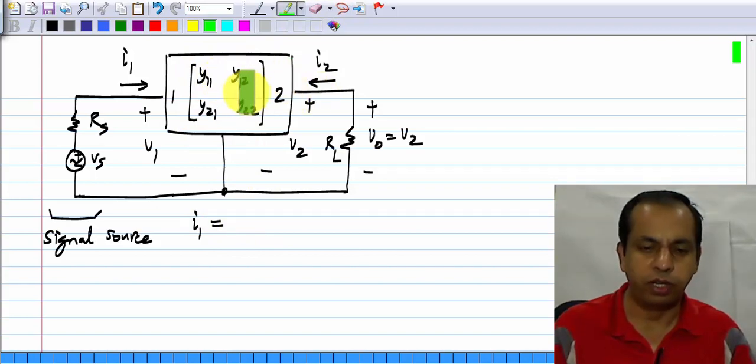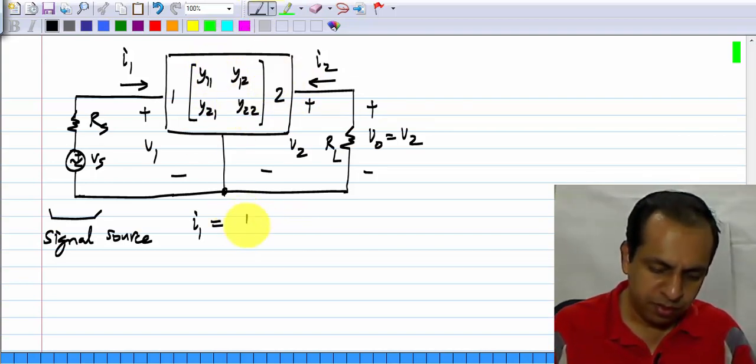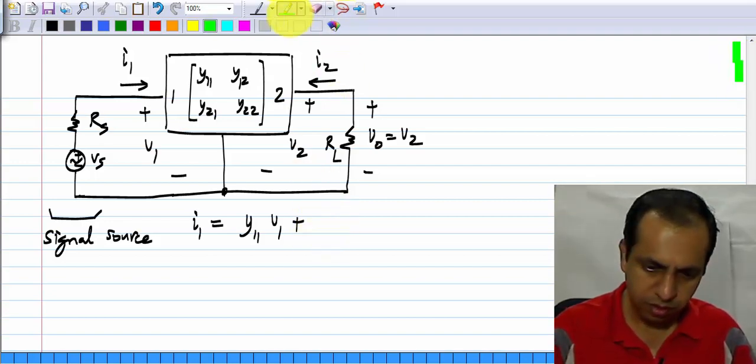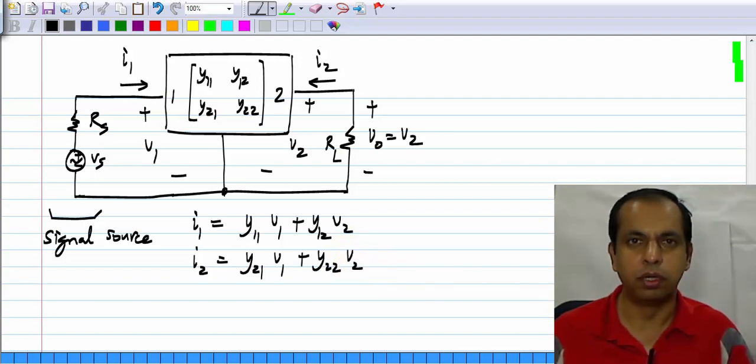This non-linear two port, by the way I could also draw the small signal equivalent of this using conductances and control sources, that is the circuit equivalent of the Y parameters. It will be the same thing: Y11 V1 plus Y12 V2, and I2 will be Y21 V1 plus Y22 V2.